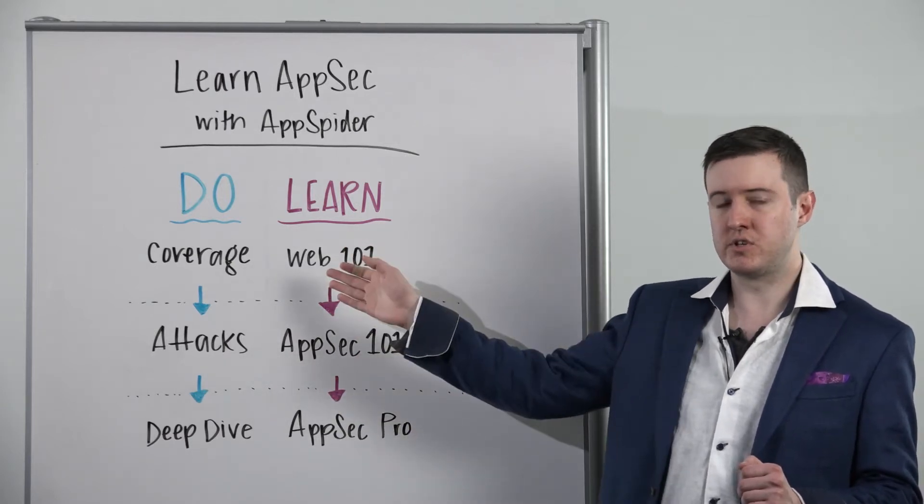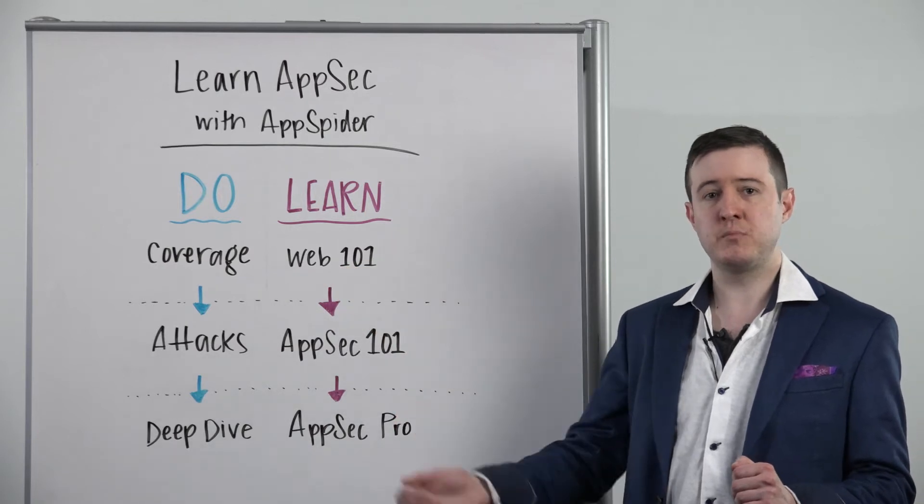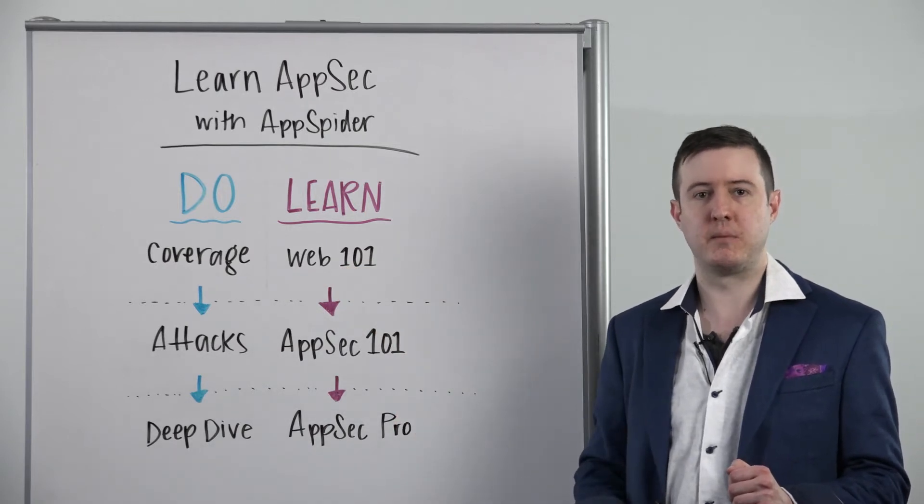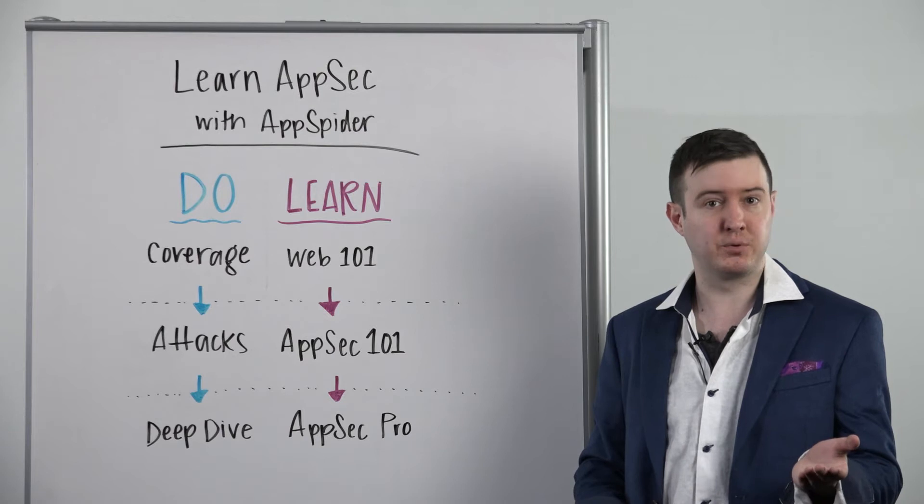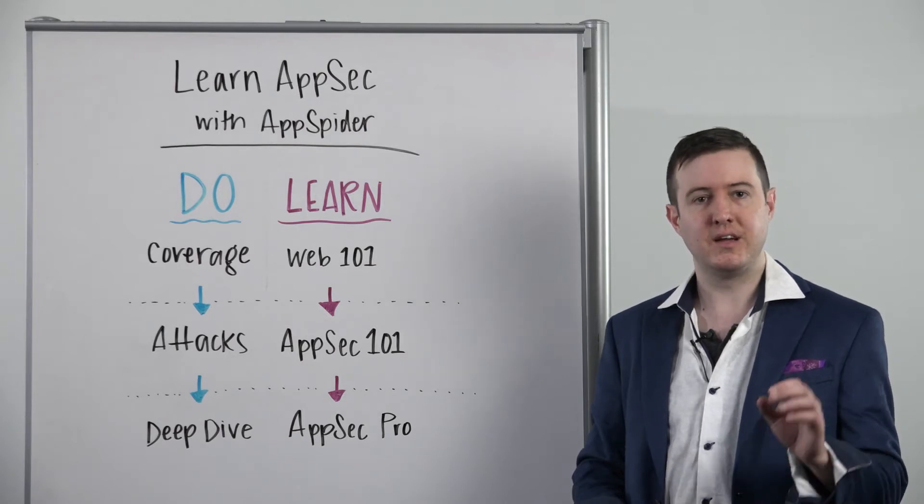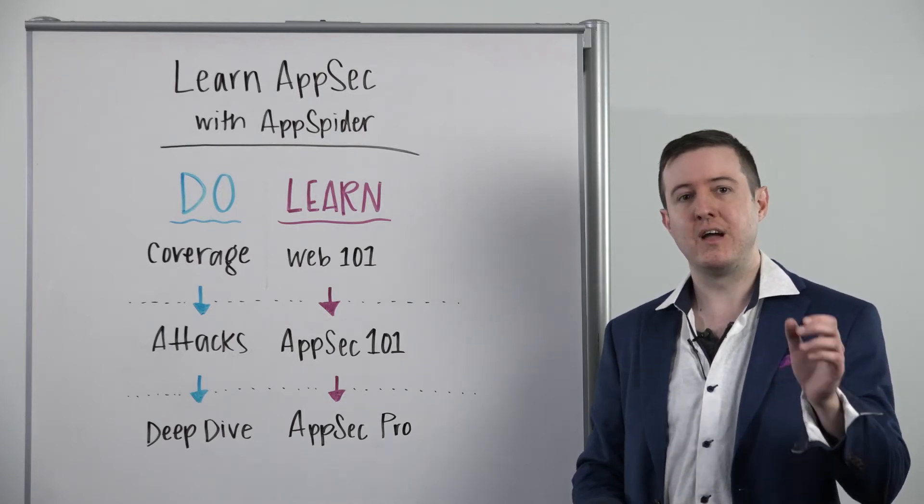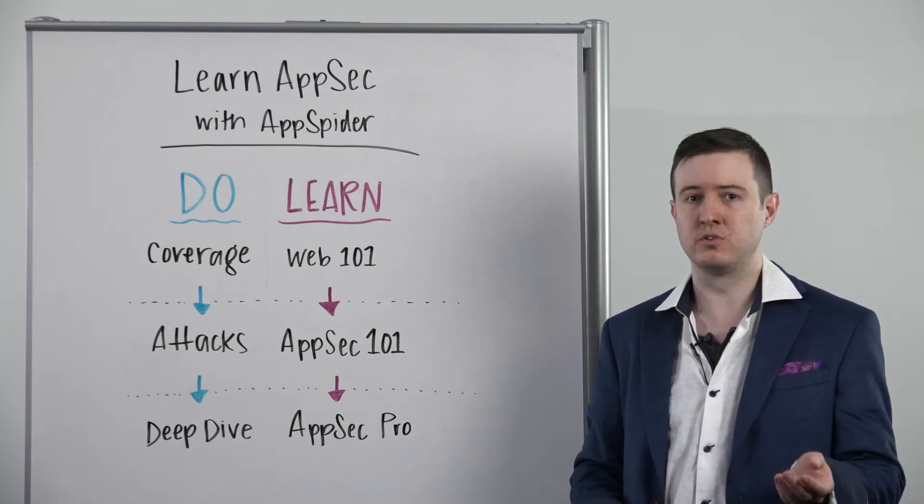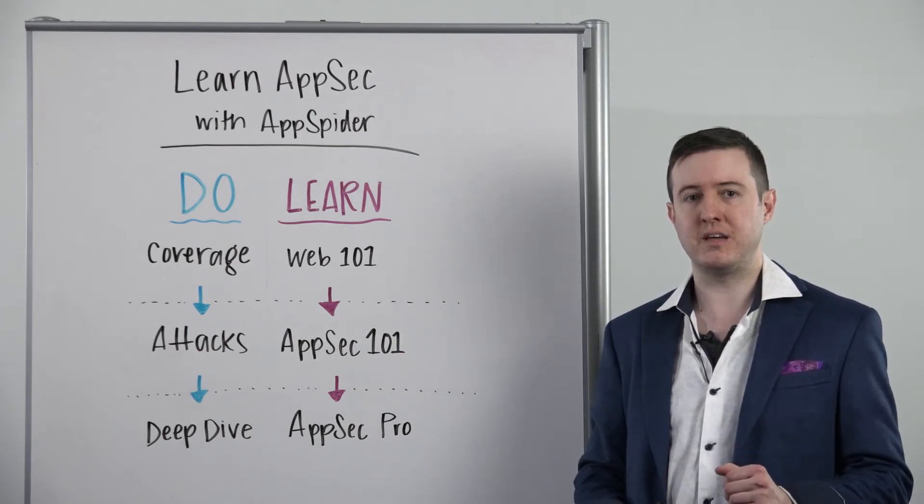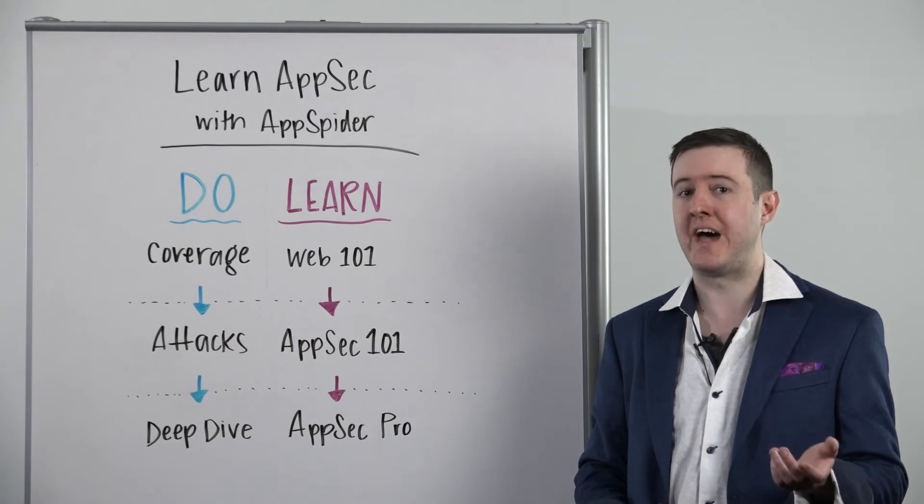In order for an automated dynamic tool to be able to test a particular application, it has to interact with that application successfully. It's actually going in live and sending requests, getting responses just like a user might in order to perform its testing. That's the dynamic part of DAST.